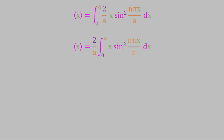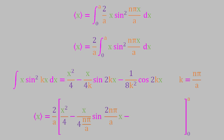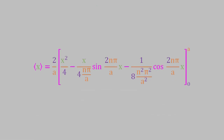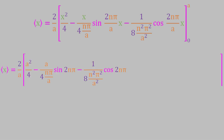This integral has a known solution. It turns out that the integral of x times the square of sine kx is equal to x squared over 4 minus x over 4k times the sine of 2kx minus 1 over 8k squared times the cosine of 2kx. For our integral, k corresponds to n pi over a. So solving that integral gives us x squared over 4 minus x over 4(n pi over a) times the sine of 2n pi x over a minus 1 over 8(n squared pi squared over a squared) times the cosine of n pi x over a. Let's plug in the upper and lower limits: the upper limit is a and the lower limit is 0.